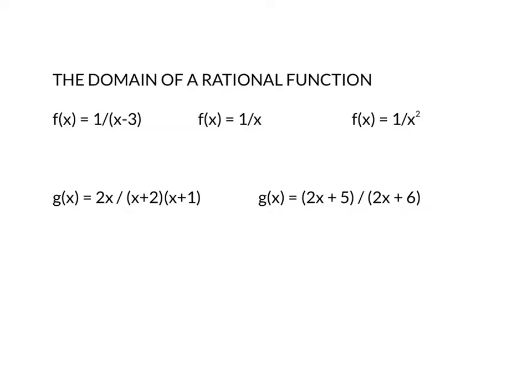The first thing I'm going to do in your homework is ask you what the domain for the function is. The domain for a rational function is everything — all real numbers — except for what would make the bottom zero. So like this first one, the domain would be all x such that x does not equal three, because three would make the denominator zero. The second one, all x such that x does not equal zero, because that would make the denominator zero.